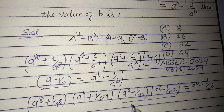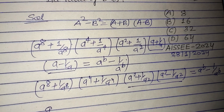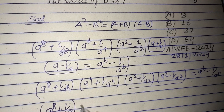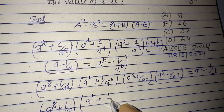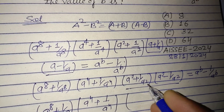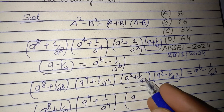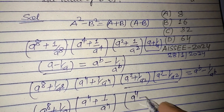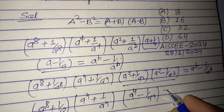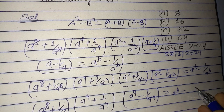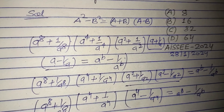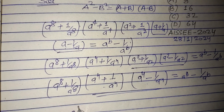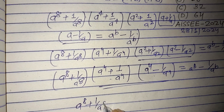Now we take (a² + 1/a²)(a² - 1/a²) — again in the form (a + b)(a - b) — so (a²)² = a^4, giving a^4 - 1/a^4. The remaining terms are (a^8 + 1/a^8) and (a^4 + 1/a^4), equaling a^b - 1/a^b.